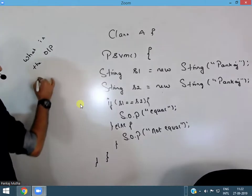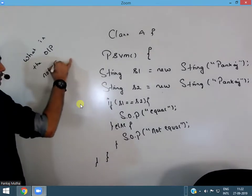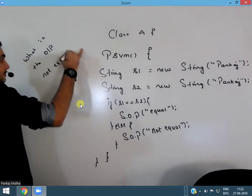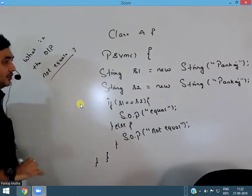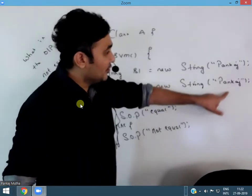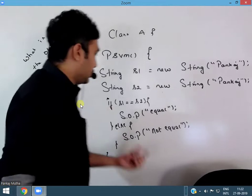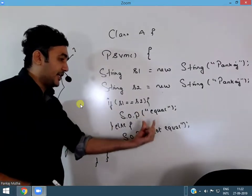The output of this program will be not equals. Now the question arises, when the values are same it should print equal, why is it printing not equal?